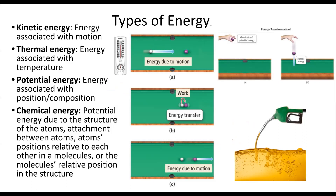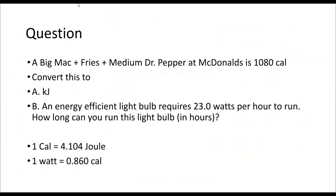We're going to start like we started our gas chapter — take a minute, pause, and try to solve this question. We're going to do some unit conversions. If you go to McDonald's and buy a number one — the Big Mac combo — with a medium drink, what I want you to do is take the unit of calorie, which we use for food, and convert to kilojoules, which is the energy unit we use in science.